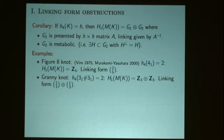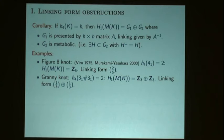Another example is the granny knot. Its two-fold cover has linking form one-third plus one-third. You can argue that doesn't split in the required way — there's nothing metabolic, nothing of self-linking zero, so it has to be at least two-dimensional.